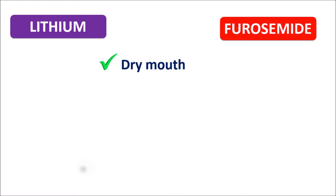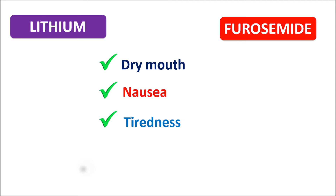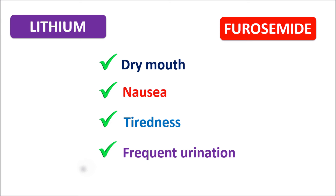The common points between lithium and furosemide are that both drugs produce dry mouth, dehydration (more pronounced with furosemide), nausea, tiredness, and frequent urination. When these drugs are combined, we can observe excessive dehydration. However, dehydration is not the most significant interaction between lithium and furosemide — they interact in another important way.